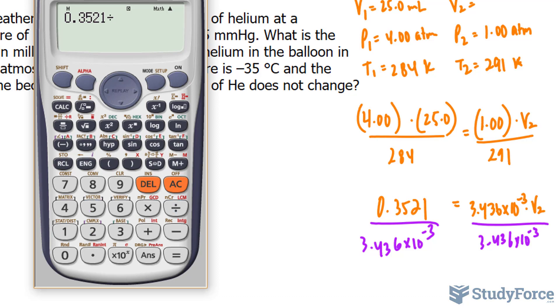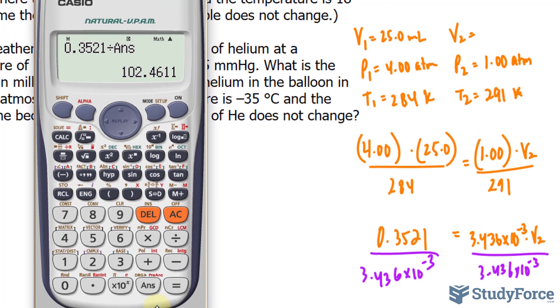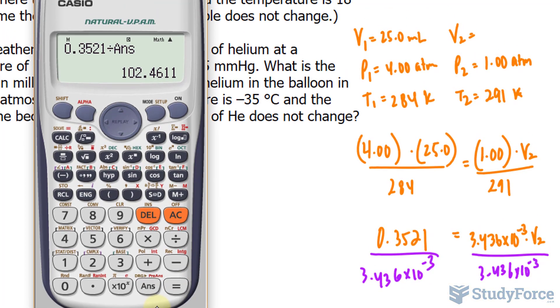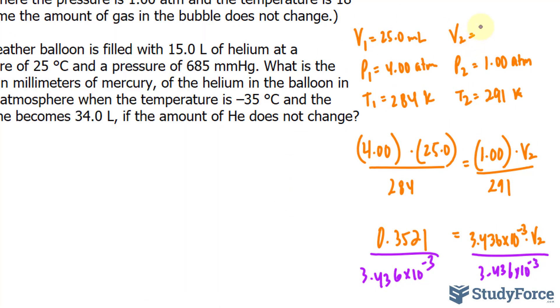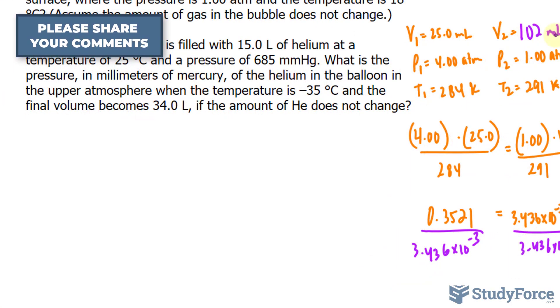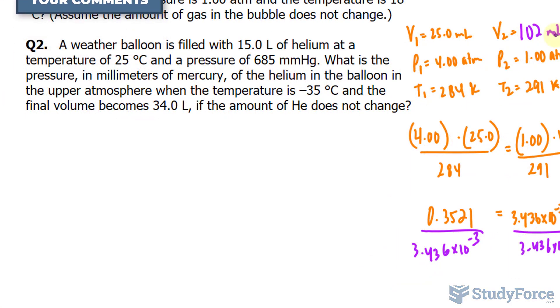0.3521 divided by the number that we just had on our screen. And we end up with a volume of 102.46 milliliters. We need this to three significant figures. So 102 milliliters is the answer. Now if you'd like to see the answer to question number two, please leave us a comment below. We've already created the video, we just haven't uploaded it yet. And we hope to hear from you soon.